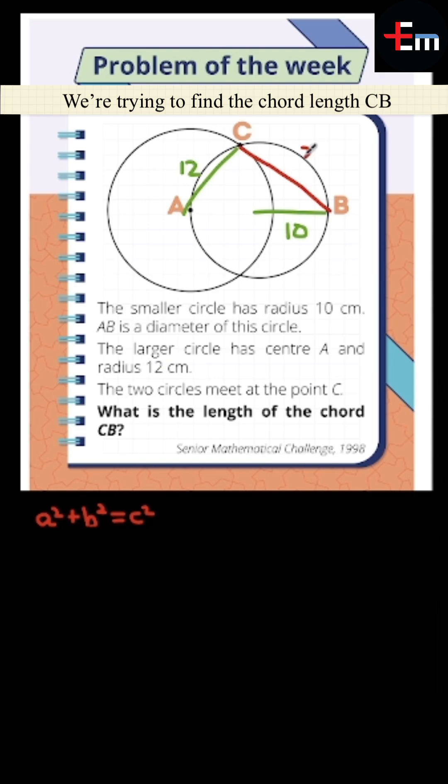We're trying to find the chord CB. Let's call it X for now. We see that we can extend this smaller circle's radius to a diameter of 20cm because of 10 plus 10.